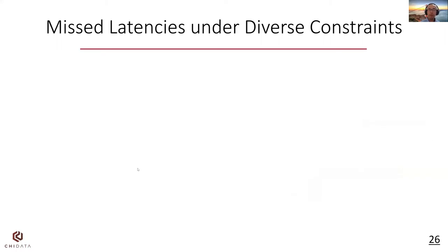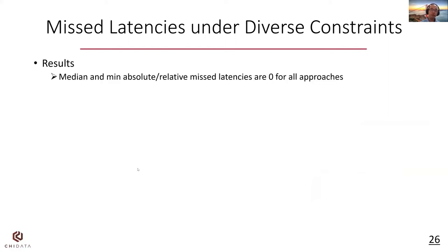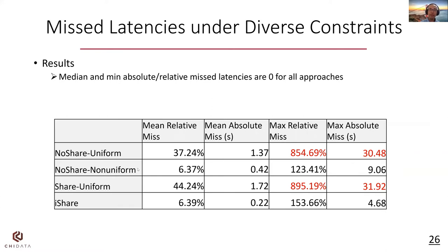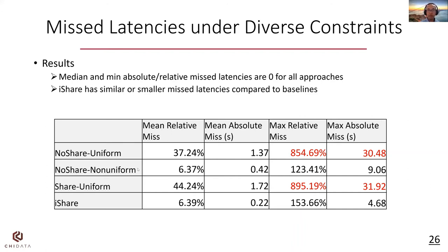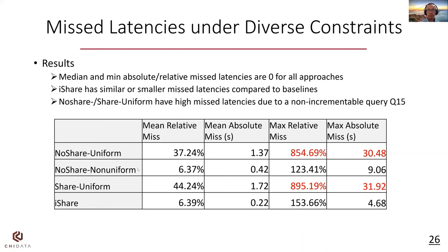Next, we report the minimum, median, mean, and max missed latencies across all queries. The median and minimum absolute or relative missed latencies are zero for all approaches, so we do not report them here. We see that iShare has similar or smaller missed latencies compared to the baselines. NoShare Non-uniform and Share Uniform have high missed latencies due to a long-incrementable query q15. Query q15 maintains a max aggregate operator over deletes — if a max value is deleted, we need to rescan all data arrived so far to find the new max value, which can lead to high query latency.